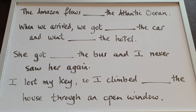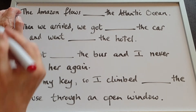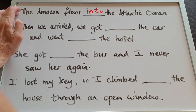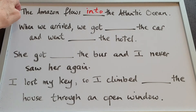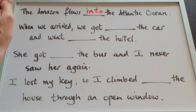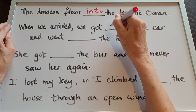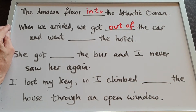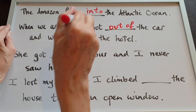Look at the first one: The Amazon flows into the Atlantic Ocean. Number two: When we arrived, we got out of the car — the opposite of 'into' is 'out of' — and went into the hotel.